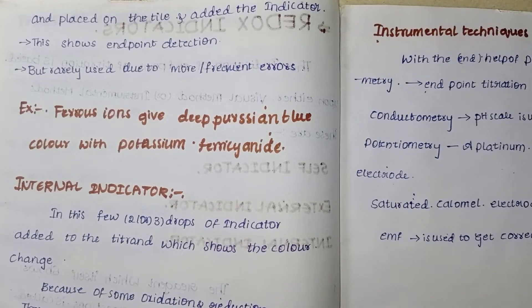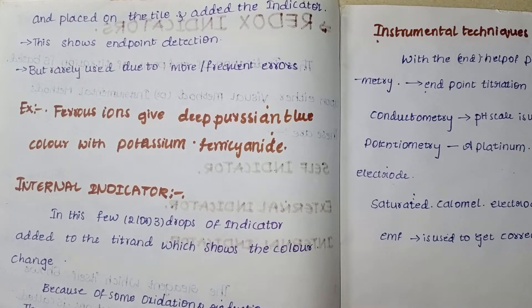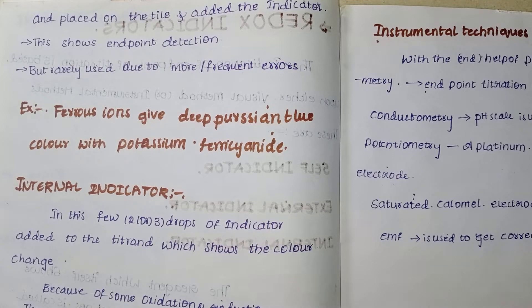For the external indicator method, we use a sample removed from the conical flask. We use a tile — which is basically just a plate — and add the indicator to the sample on the tile. This shows the end point detection. The solution, which is the reagent, is placed on the tile with a few drops of indicator. This process is external because the sample is taken out of the conical flask.